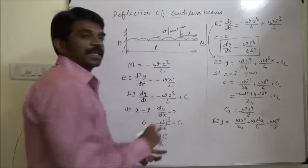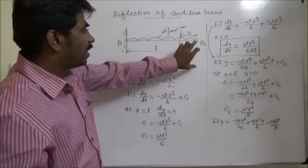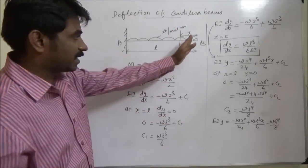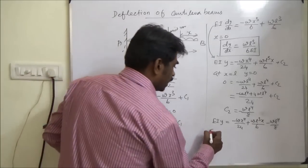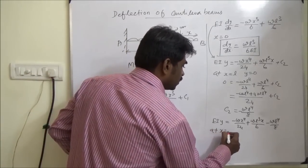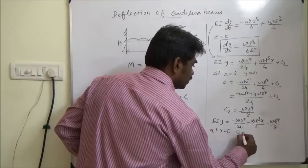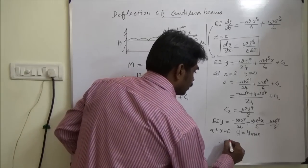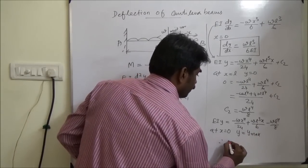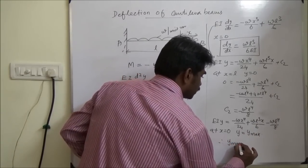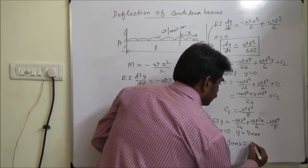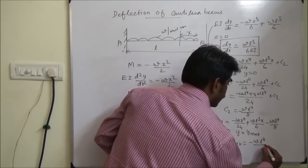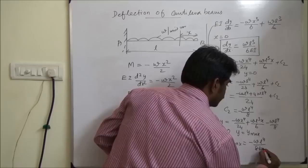Maximum deflection will be at B, the free end. At x equal to 0, y equals y_max. Therefore, y_max equals minus WL⁴/8EI.